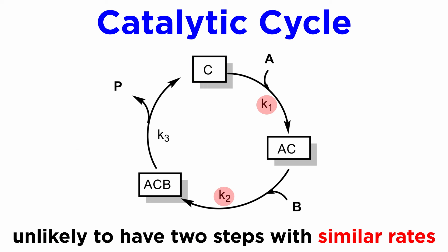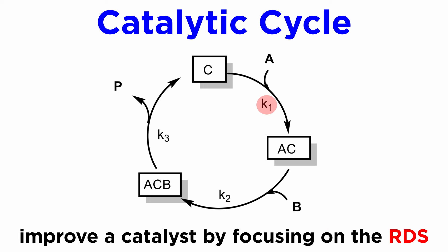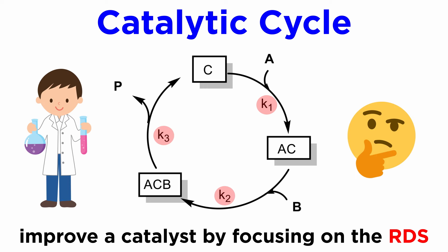It is rather unusual to have two steps proceeding at similar rates, although in principle this is possible. To improve a catalyst, it is imperative to focus on the RDS, because improving that step will improve both TON and TOF. This explains why chemists run kinetic experiments to see which is the RDS of a cycle. Once this step has been identified, the chemist can manipulate the ligands or reagents to improve it. But the field of catalytic reaction kinetics is quite specialized and we will not delve into this topic in any detail.